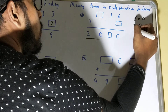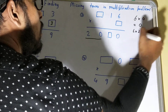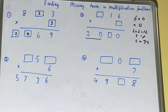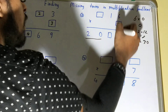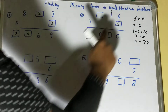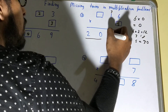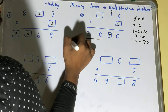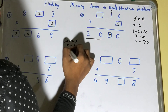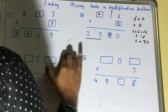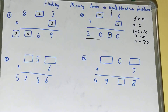Six times five is 30, so we place five — six times five gives zero and three carries to the next digit. Then five ones are five, plus the three carry makes eight. Next, we need to multiply five with something to get 20: five times four is 20. So multiplying by four gives us 20.